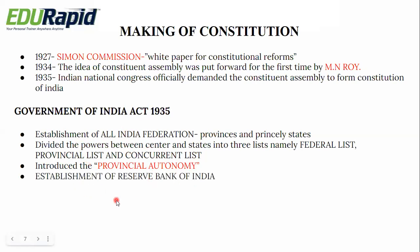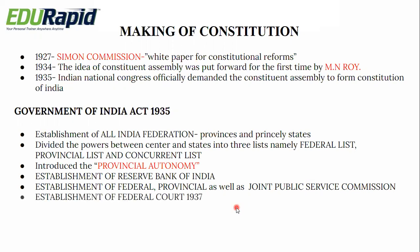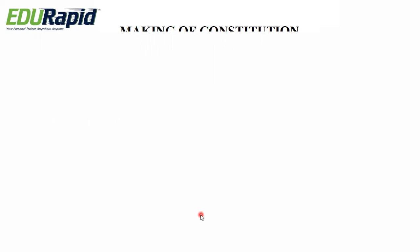The Government of India Act 1935 also established the Reserve Bank of India, established federal, provincial, and Joint Public Service Commissions — the Joint Public Service Commission allowing one or more states together to recruit civil servants — and established a Federal Court in 1937.